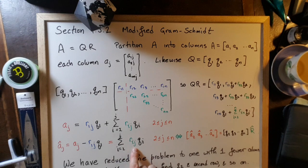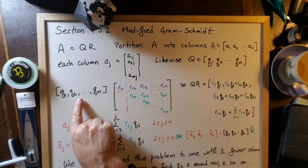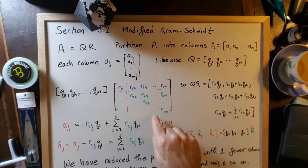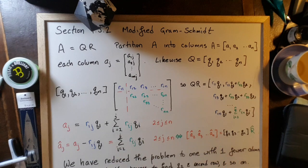Each of these things, each of these equations, is a linear combination of the columns Q2 up to QN. And it's the linear combination given by exactly these entries in the upper triangular matrix.